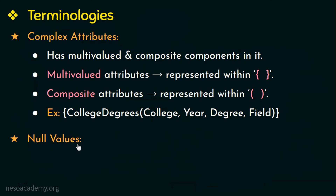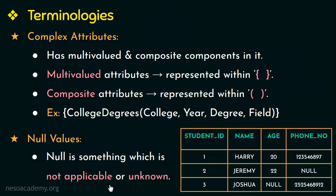Next we are going to learn about null values. Null is something which is not applicable or unknown. When does null mean not applicable? In some cases an entity might not have an applicable value for an attribute. For example, the attribute college degree applies only to persons with a college degree, and landline number applies only to persons who have a landline. So a person with no college degree will have null for college degree, and a person with no landline will have null for landline number — meaning null is not applicable.